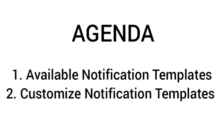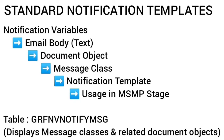In this video we will first discuss the standard available notification templates in the system, then see the steps to customize them. Any workflow event in the access control workflow will trigger email notifications based on predefined message classes. Each message class has one document object containing the message body of the respective workflow event. The link between the message class and document object can be viewed in the table GRFNV_NOTIFYMSG.